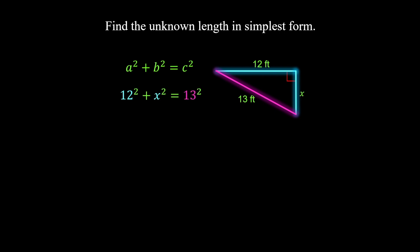We solve for x by first evaluating powers. 12 squared equals 144. Bring everything else down. 13 squared equals 169. To isolate x squared, subtract 144 from both sides, giving us x squared equals 25. Finally, take the square root of both sides to undo the squaring operation. The square root of 25 equals 5. Therefore, x equals 5 feet.